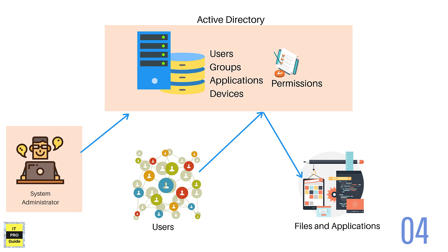After you implement an Active Directory, users will access files and applications after authenticating through the Active Directory. Active Directory holds information about users, groups, applications and devices, and permissions are assigned to users. It becomes easy for a system administrator to create a user and provide permissions to applications — instead of going to each application, the admin can complete the task from Active Directory. For users, it is easy because they can log into their account from any computer, since it is no longer local computer-based authentication but central authentication. This adds advantages to the management of users and permissions.